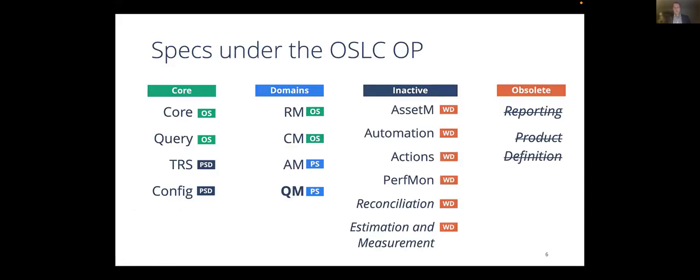We manage a number of specifications under the Open Project. The main specifications are OSLC Core, which defines an underlying foundation that allows interoperability. Next, we have an OSLC Query specification that allows uniform query of resources across OSLC servers, while remaining simpler than popular query standards such as SQL or SPARQL. Next is the Tracked Resource Set specification, which allows you to build event-based systems tracking changes to OSLC resources across your whole engineering toolchain. And finally, a Configuration Management specification that allows you to deliver a consistent set of resources.